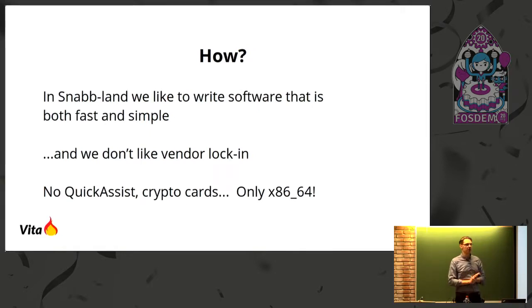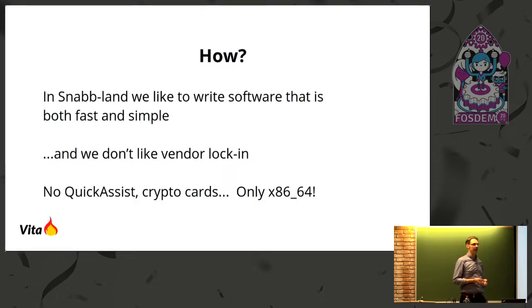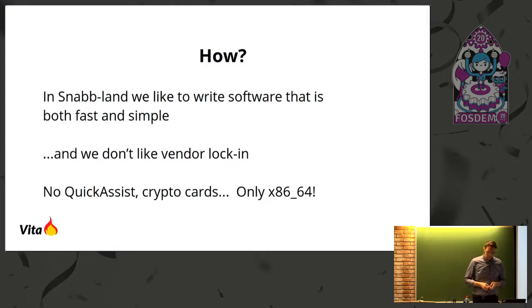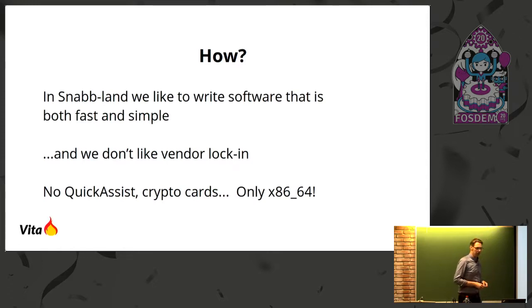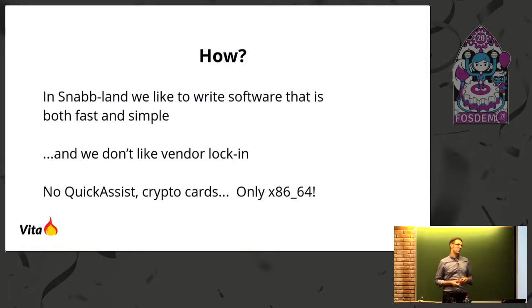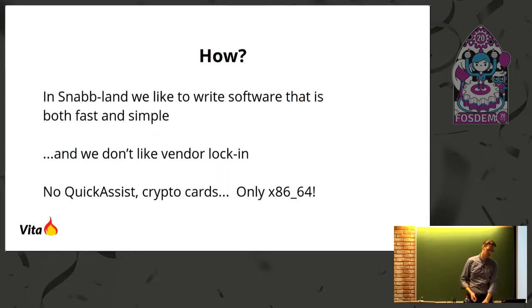How does Vita do it? In Snap, we like to write software that is both fast and simple. We think that simple designs translate to efficient designs, and we don't think that fast programs need to be complex. We also like to avoid vendor lock-in wherever possible. For Vita, this means we avoid any extensions such as Intel Quick Assist or proprietary crypto cards, and rely on x86-64 and its commonly supported architecture extensions — commonly supported meaning more than one vendor produces CPUs that support that.